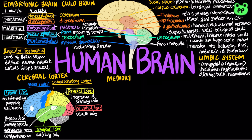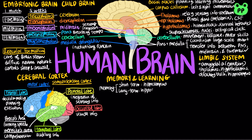Learning can occur when neurons make new connections or when the strength of existing neural connections changes. Short-term memory is accessed via the hippocampus. The hippocampus also plays a role in forming long-term memory, which is stored in the cerebral cortex.